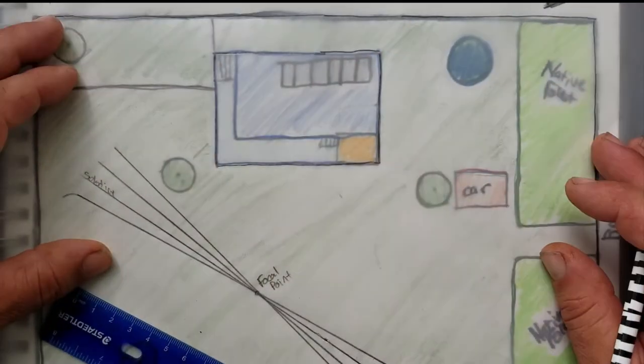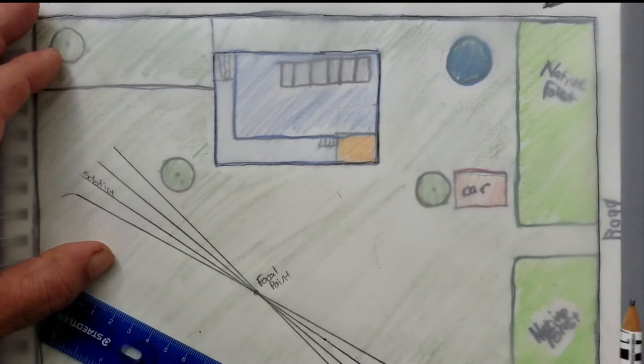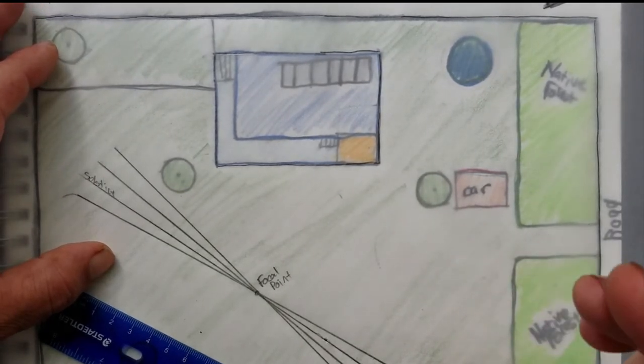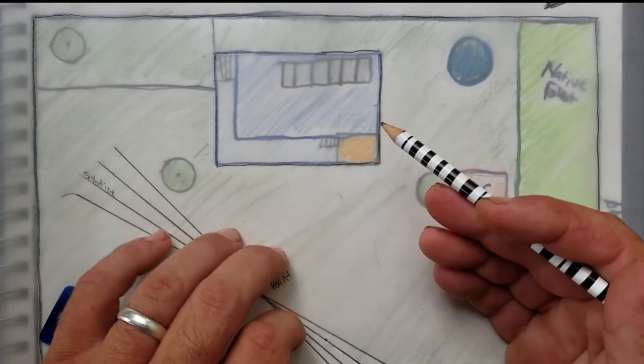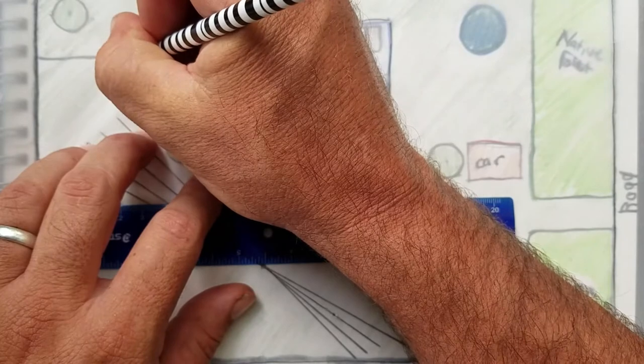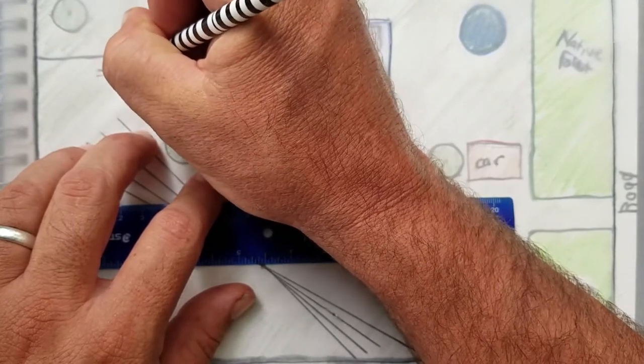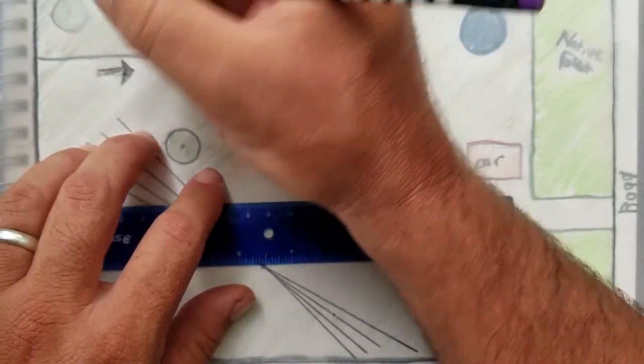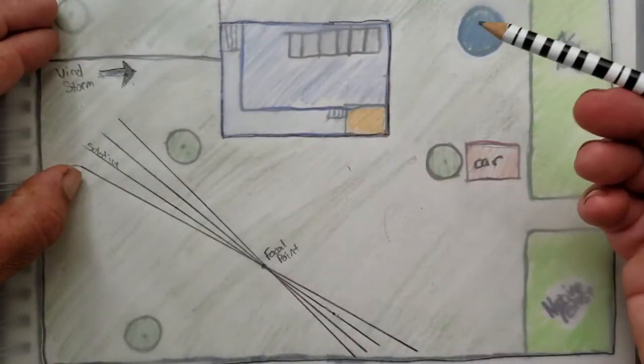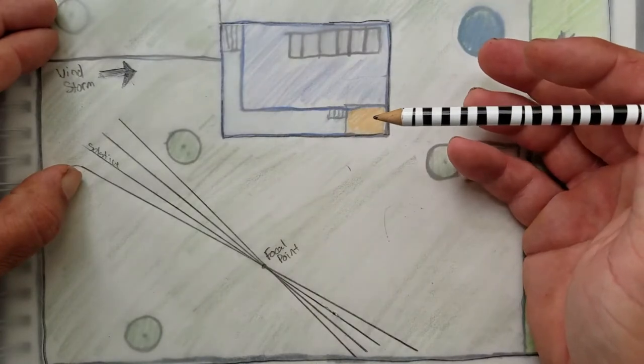So another element that is coming into our site would have to be the wind, and especially for us the rain. So when the wind and the rain comes onto the site, it moves in from this direction. And these are the winds that we have to be careful of. We want to identify that wind storm rain pattern so that we can design accordingly.